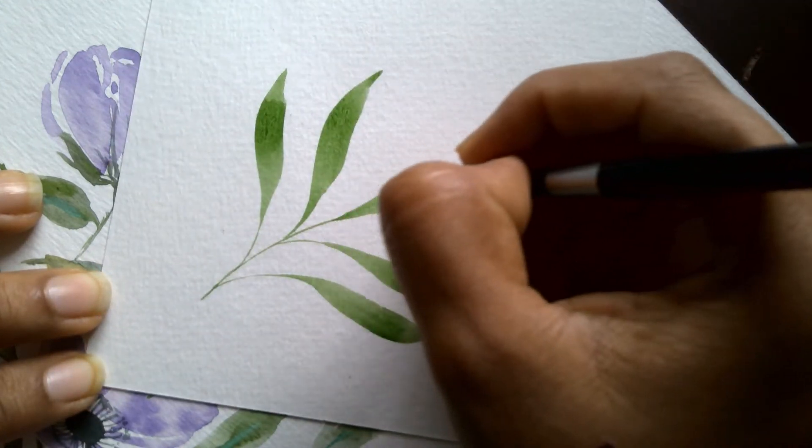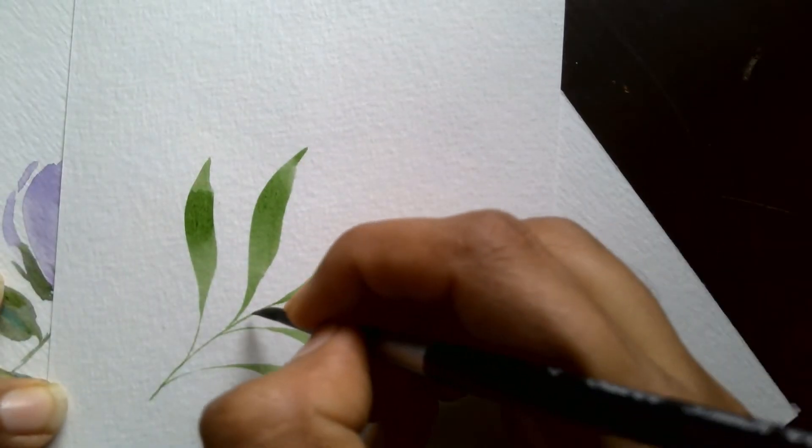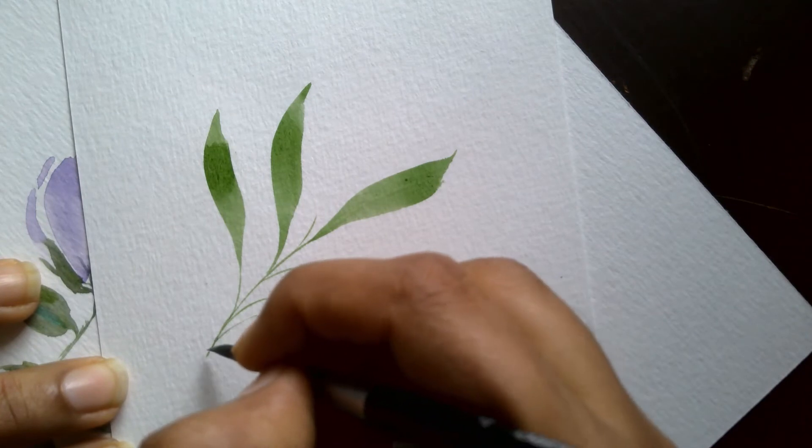When you're creating a branch, always ensure there are an equal number of leaves on either side of the central vein.